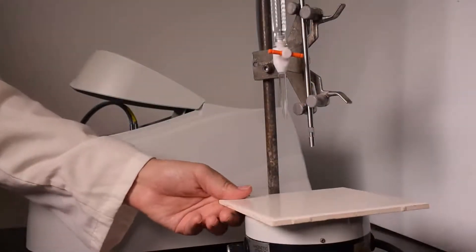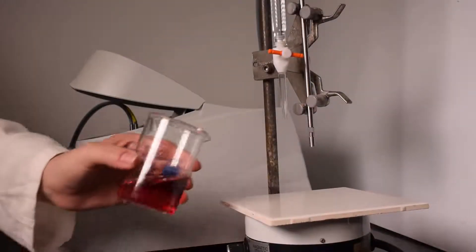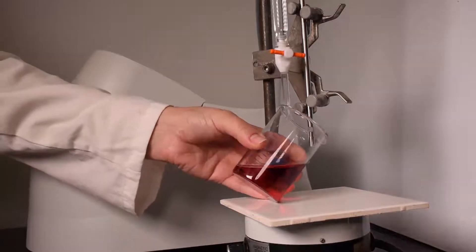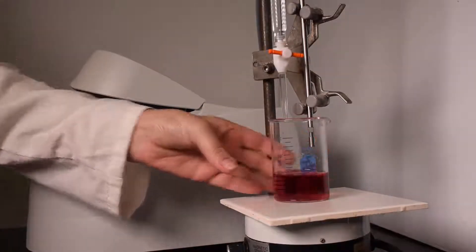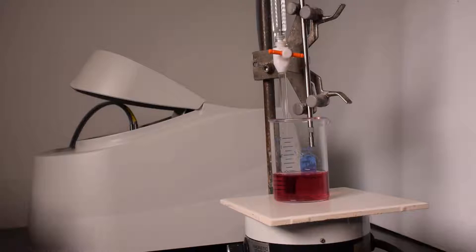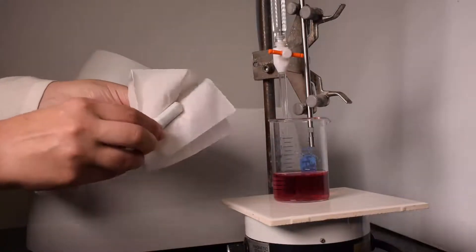Place your beaker with aliquoted sample on top of a white tile and magnetic stirrer. Transfer a magnetic stir bar into the beaker using a kimwipe.